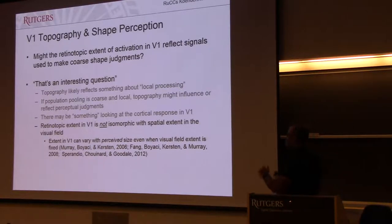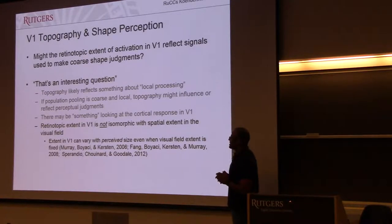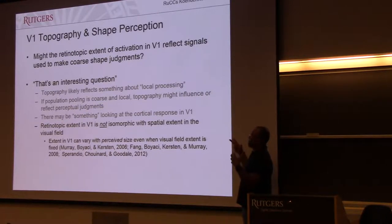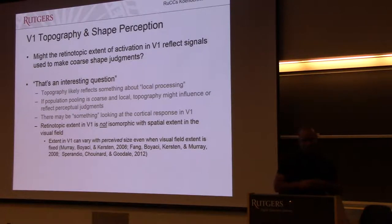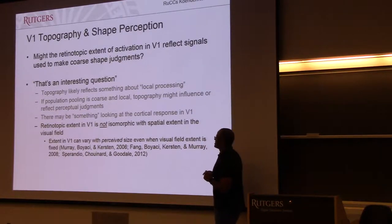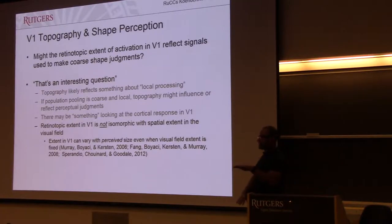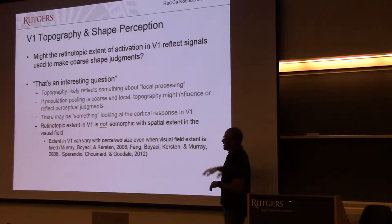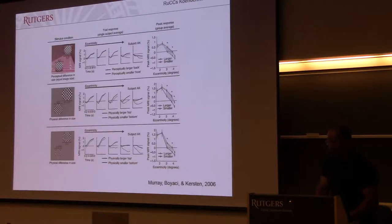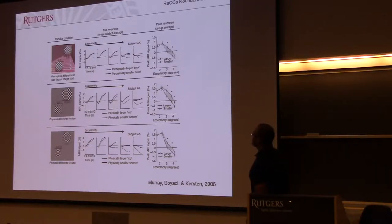All of this wouldn't be terribly interesting if retinotopic extent were really isomorphic with spatial extent in the visual field — because then it would still be trivially true that you'd reflect the signals used to make coarse shape judgments. The key point is that retinotopic extent is not isomorphic with spatial extent in the visual field. There was actually evidence of this before we completed our work: the extent of activation in V1 can vary with perceived size even when the visual field extent is fixed.